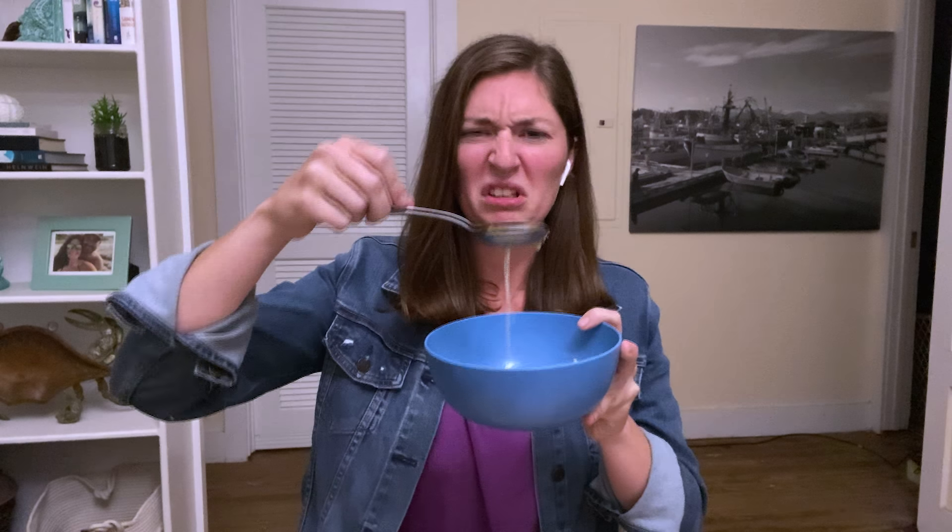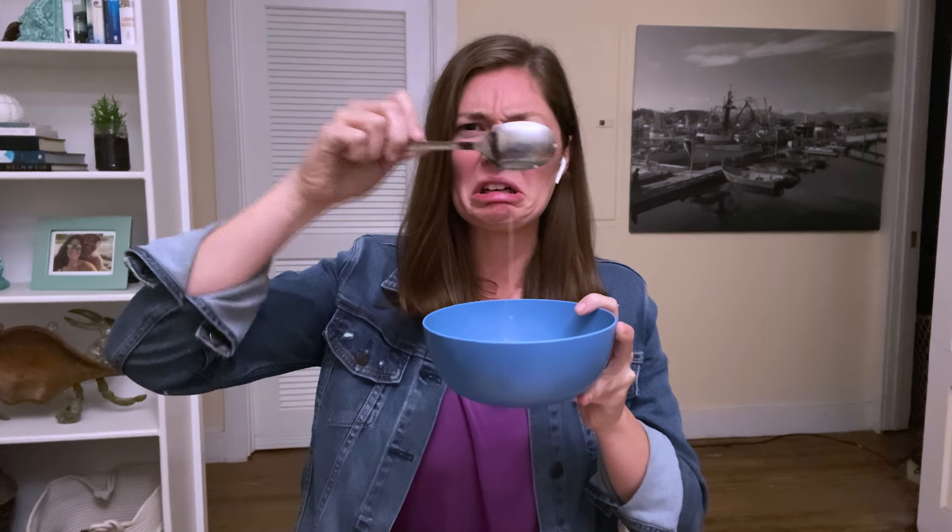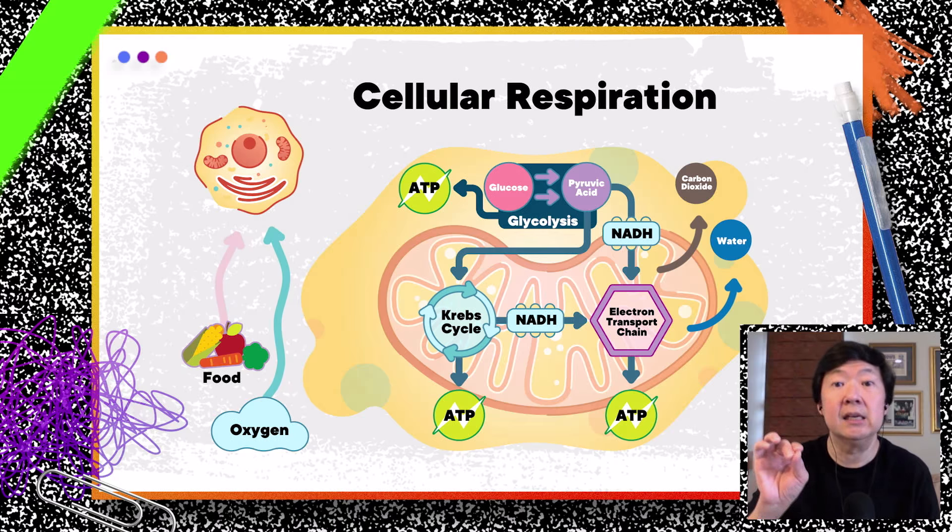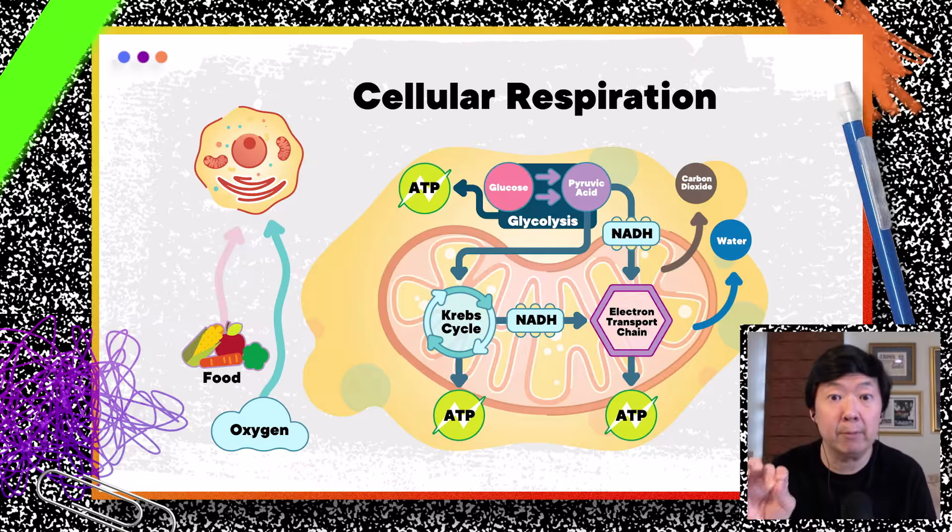But at this point, your body isn't done uncooking your food yet. A similar process has to happen at the molecular level, breaking down bigger molecules into smaller pieces and releasing the chemical energy your body can use to power itself. And that process is called cellular respiration.